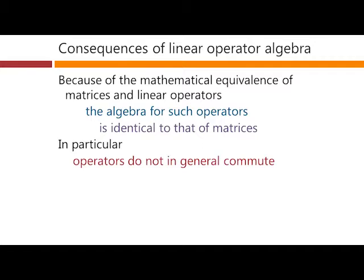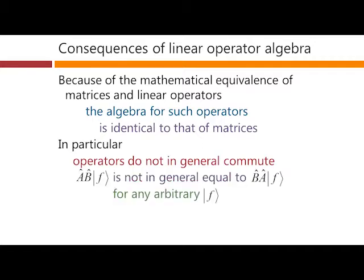What do we mean by that? We mean that A after B operating on f is not in general equal to B after A operating on f for some arbitrary f. And you may remember from matrix multiplication that it's not in general true that the matrix A times the matrix B is equal to the matrix B times the matrix A.